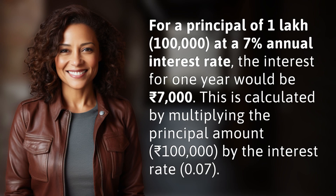For a principal of 1 lakh — 100,000 rupees — at a 7% annual interest rate, the interest for one year would be 7,000 rupees. This is calculated by multiplying the principal amount, 100,000 rupees, by the interest rate, 0.07.